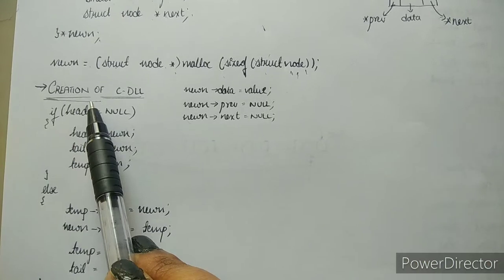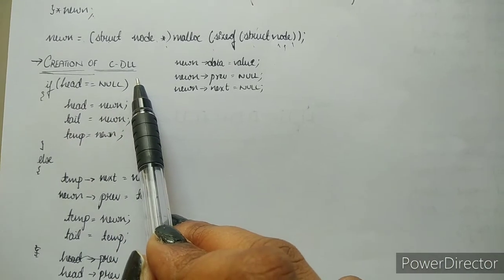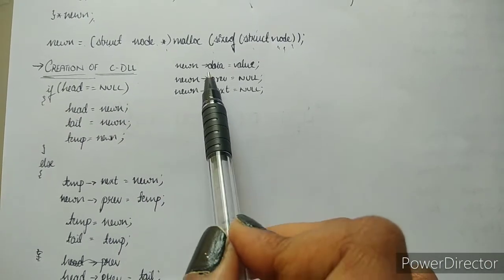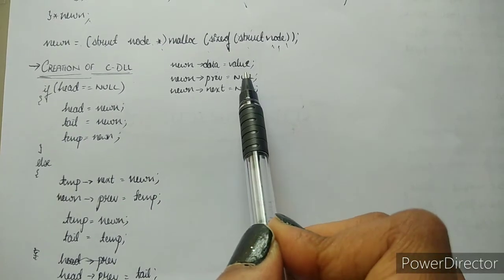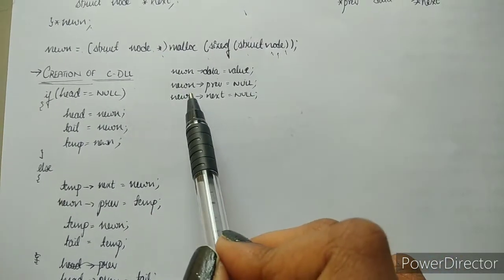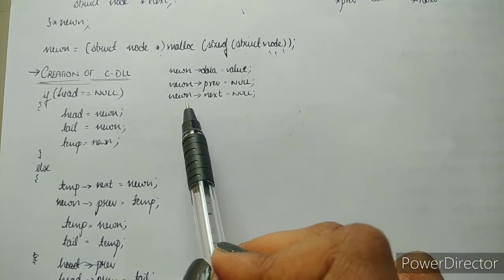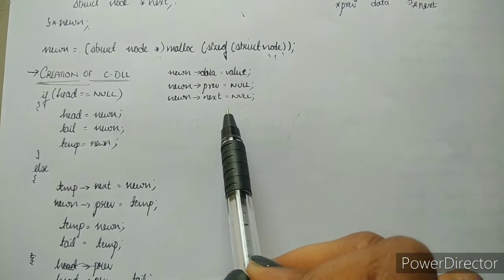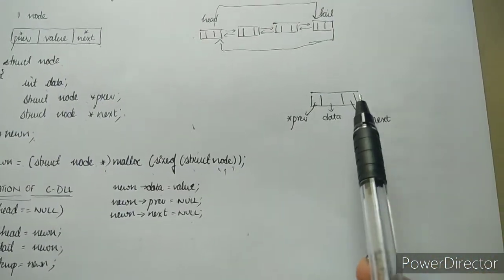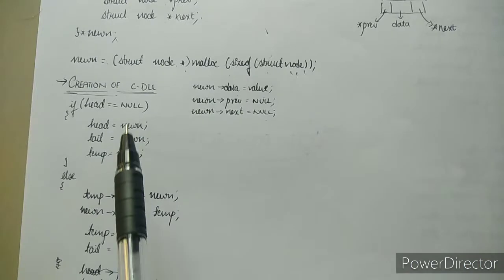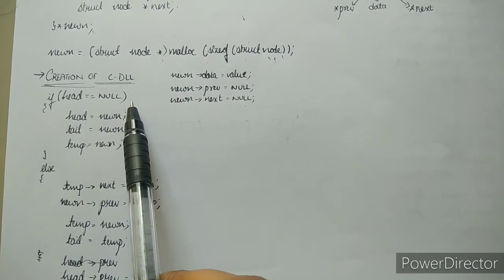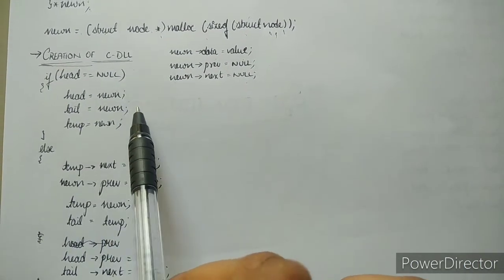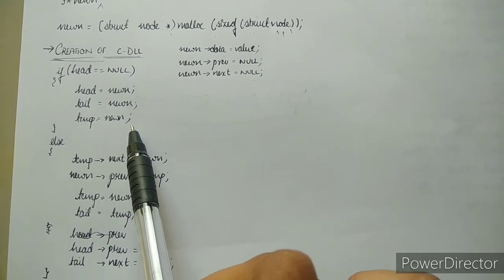Now let's see the creation of a circular doubly linked list. New node's data will be given some value. New node's previous will be null and new node's next will be null — these are the initial values given to the fields of a node. Now if head is null: head is new node, tail is new node, and temp is new node.